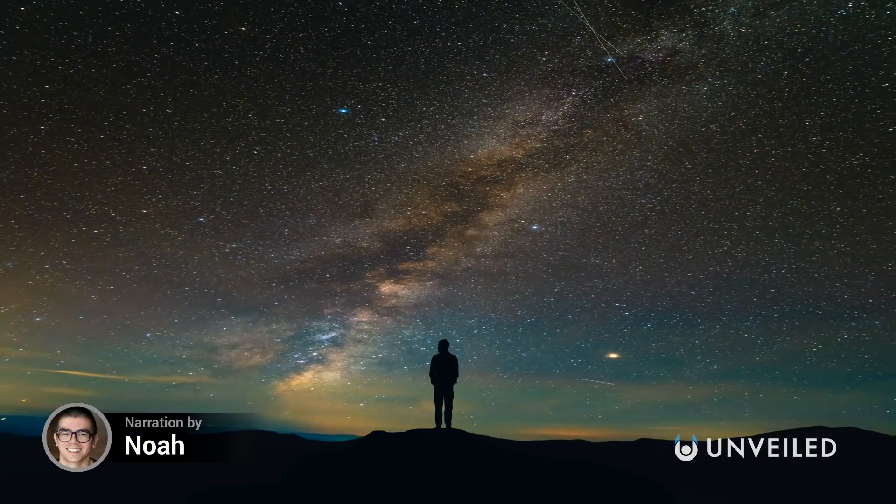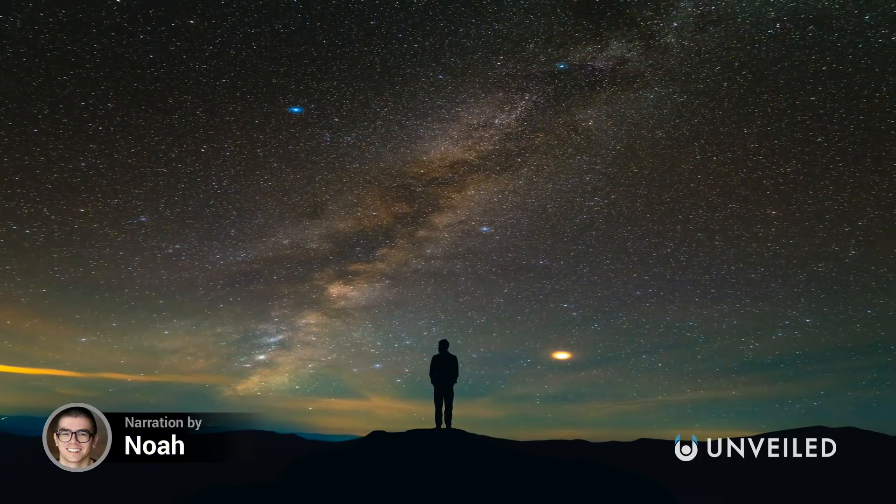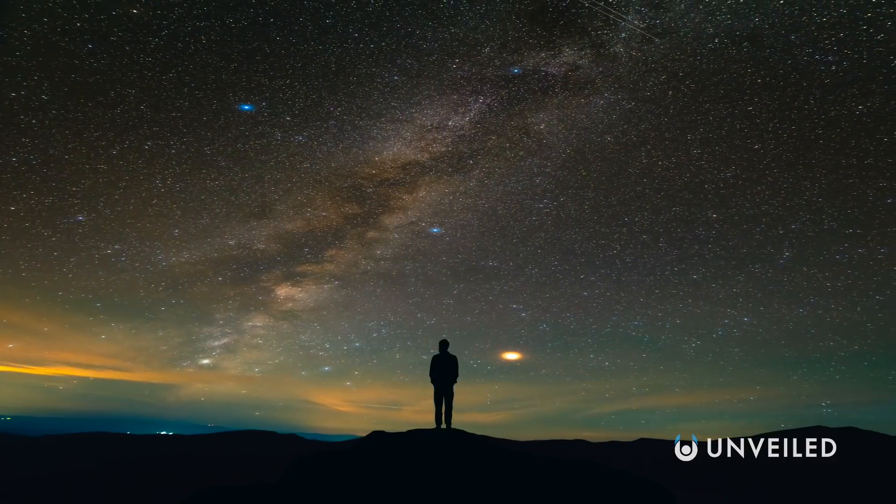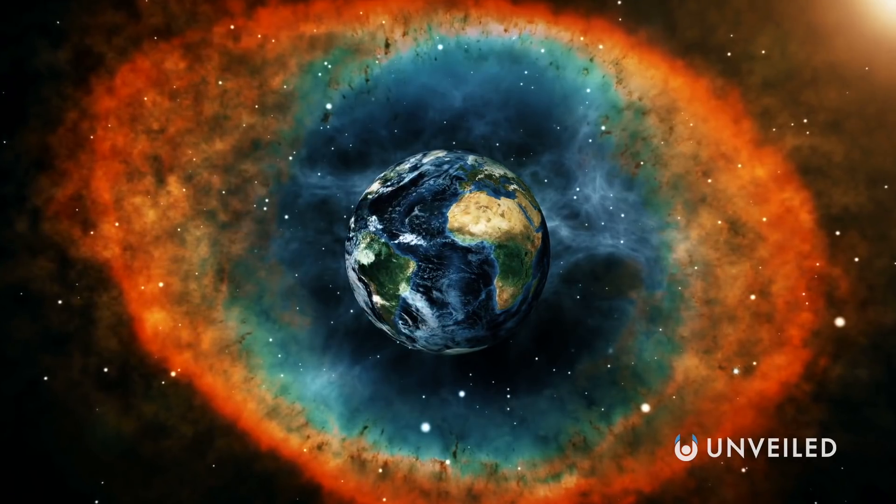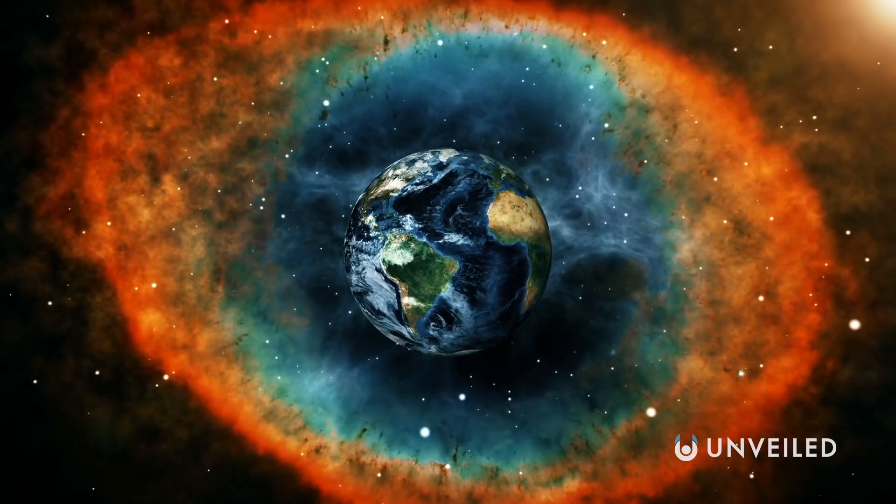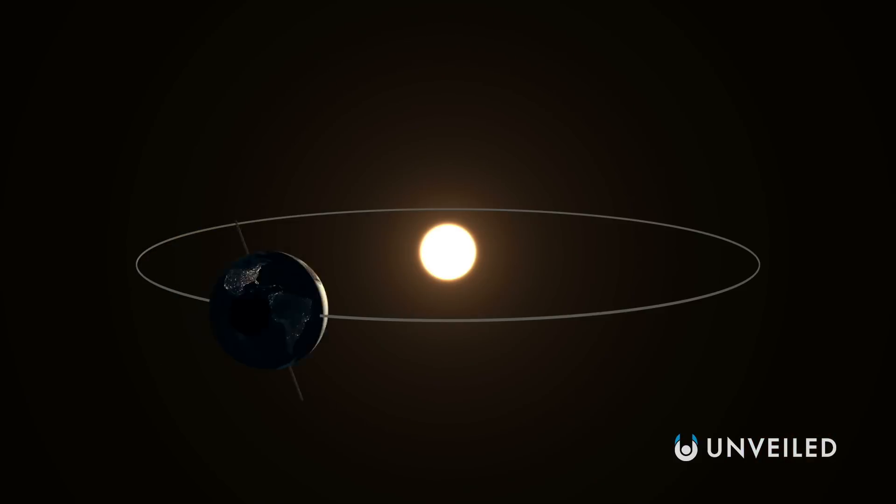By some measures, we know our place in the universe. We live on Earth, in the solar system, in the Milky Way galaxy. We're about 25,000 light-years away from our galactic center, and our planet speeds around the sun at about 66,000 miles per hour.